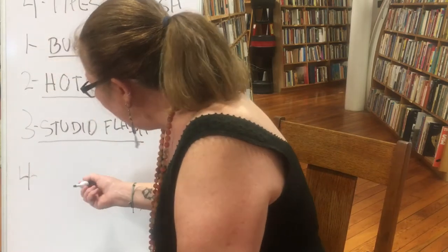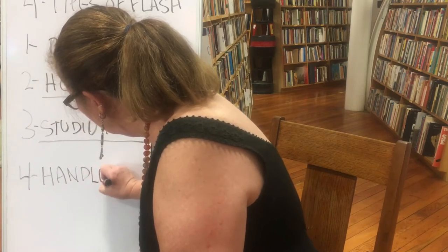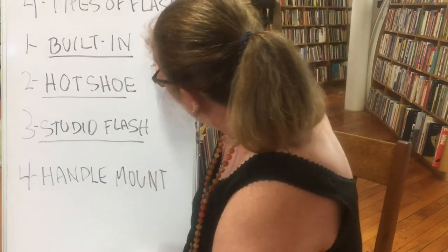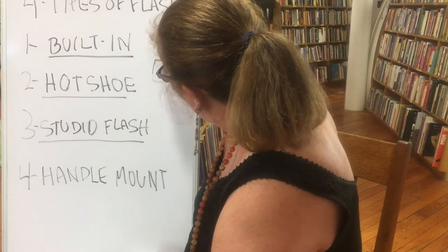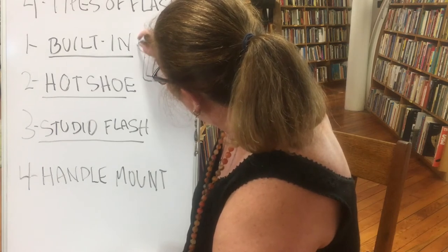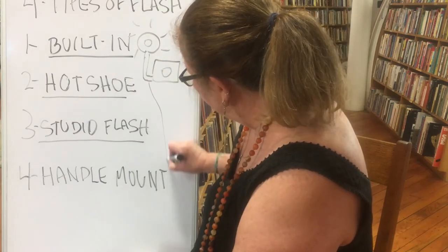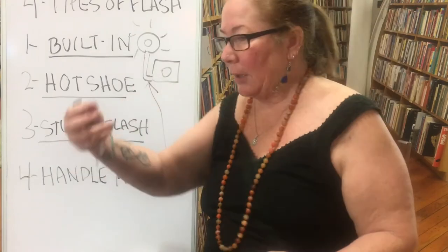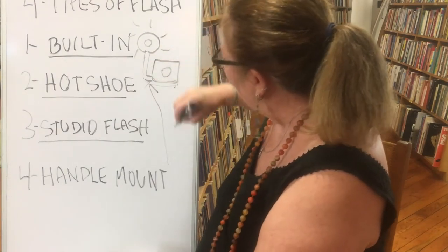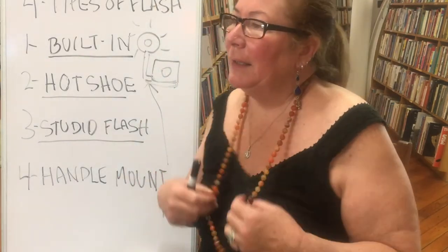The fourth kind is a little less common anymore — it's a handle mount. You might have seen it in old films: something coming out from the side of the camera with the flash on the end. That's the handle mount. You can actually hold it; it usually has a battery pack that attaches to the bottom of the camera, giving it a lot more power.